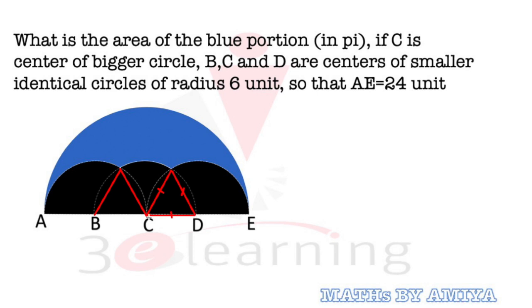C to D is the radius, C to this point is, kuch nomenclature karte hain, yeh radius hai, yeh dono barabar hai, yeh dono barabar hai, due to the radius, equilateral triangle banega, toh mere paas 2 equilateral triangles hai.